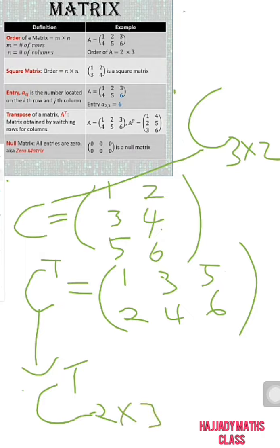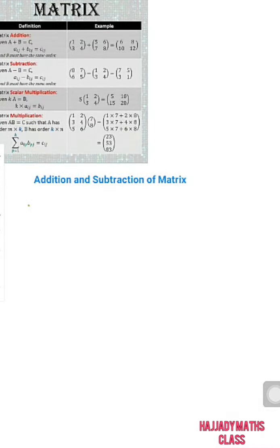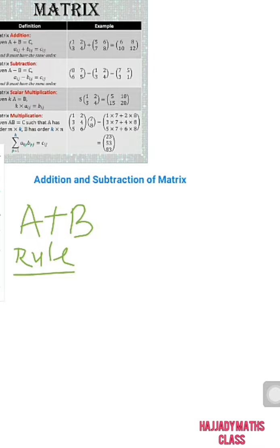Lastly, we have what is known as the null matrix, or zero matrix. In a null matrix, all entries are zero — all the entries must be zero. Now we look at the basic operations of matrices. In this aspect, we are looking at addition and subtraction of matrices. For you to add matrix A and B together, one of the rules states that their order must be equal.